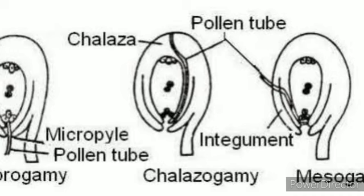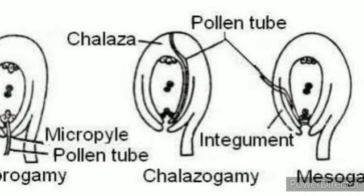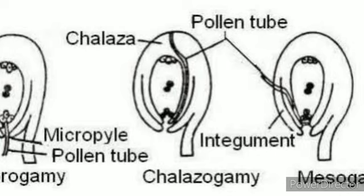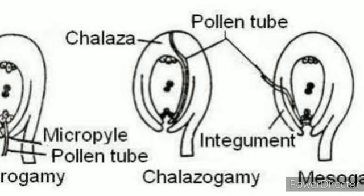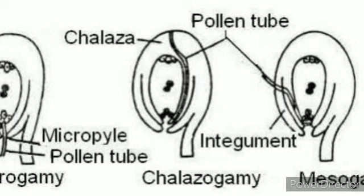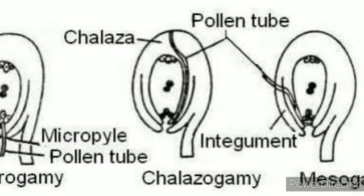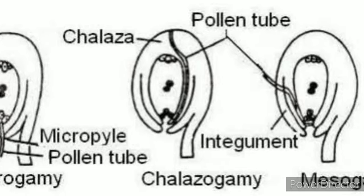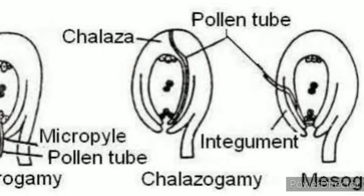The second type is chalazogamy, in which the pollen tube enters the ovule through the chalaza. Example is casuarina. The third type is mesogamy, in which the pollen tube enters the ovule through the integuments. Example is cucurbita. These are the three ways pollen tube entry into the ovule occurs.